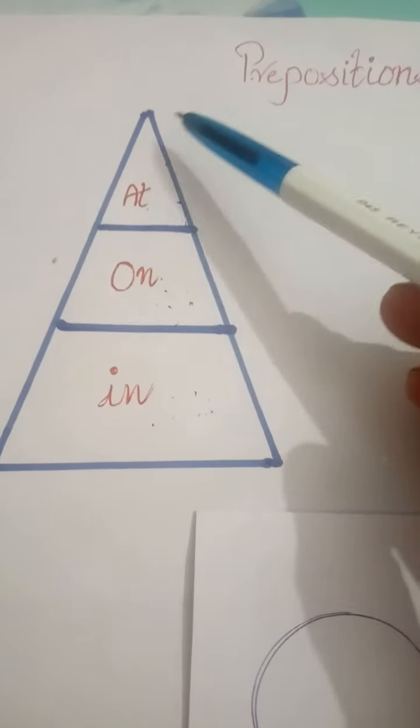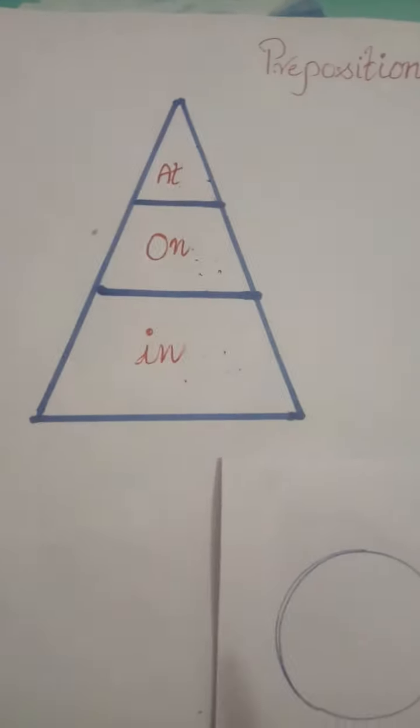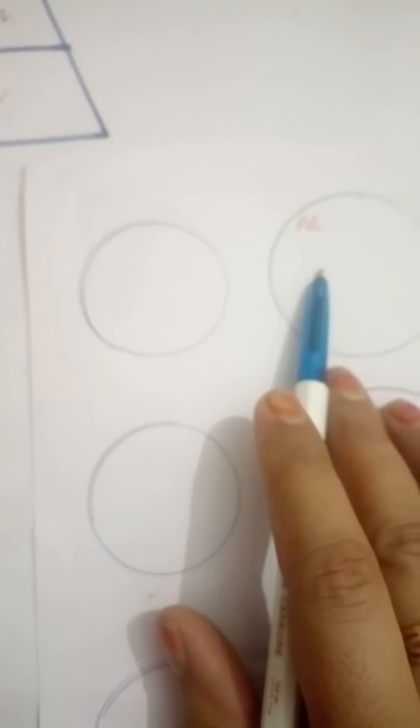Now, as you can see, at is in the narrow part of the triangle, so we can say that at is used for very narrow or specific situations.